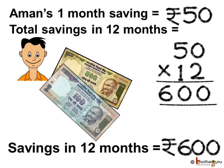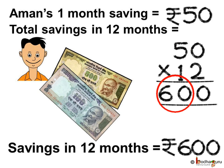If you know the table of 12, 5 twelves are 60. So let us multiply. 12 zeros are 0, we write 0. Next, 12 fives are 60. So the answer is 600. Thus in 12 months he saved 600 rupees.